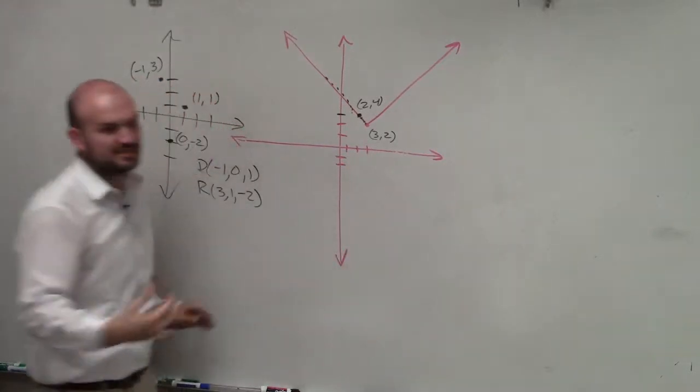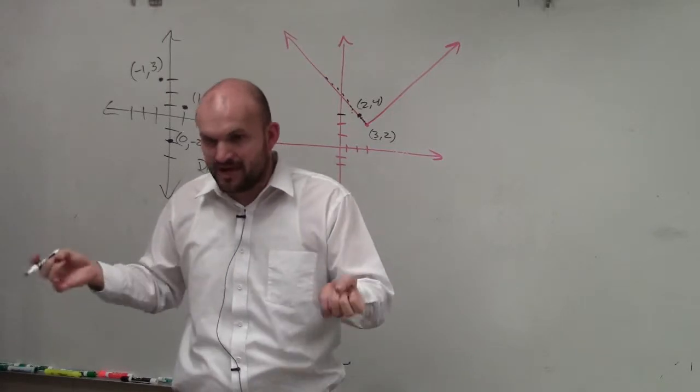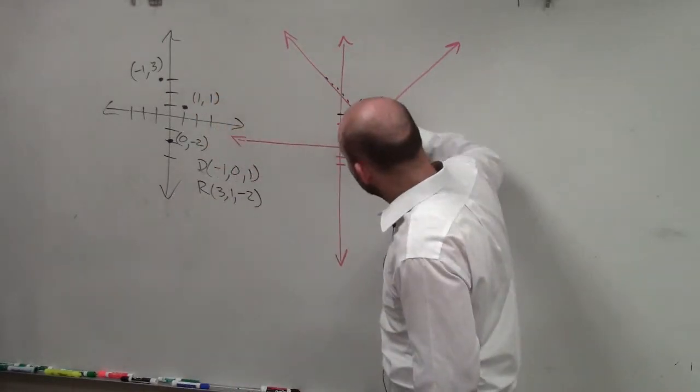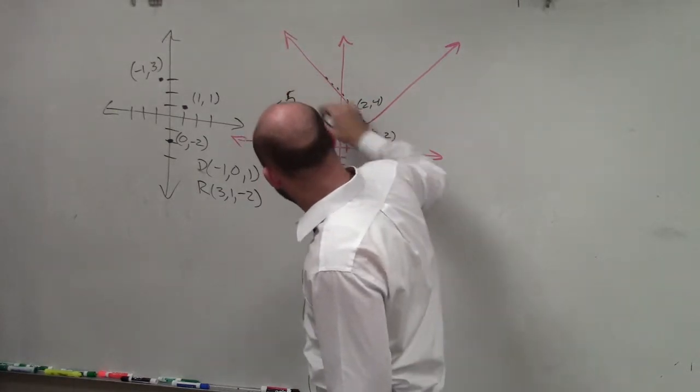So rather than trying to list them all, let's do it the other way. Let's say what points are not in my domain. So is there a point for negative 5? Is x equals negative 5, is that a part of my domain?